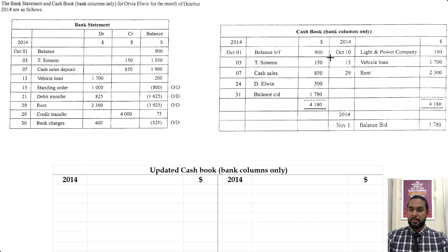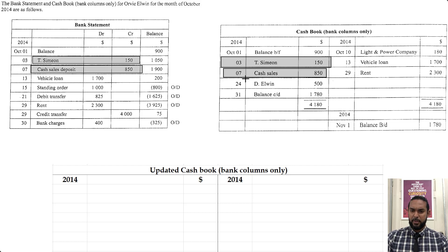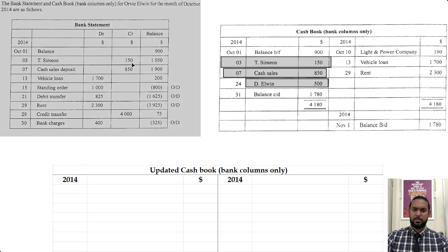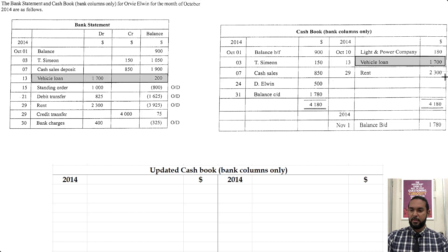Now let's look at the cash book. It also started at 900, so the opening balances match. T-Simeon appears in both — those match. The 850 in sales matches across as well. But I'm seeing a DL Win for 500 in the cash book that's not in the bank statement. And there's also a credit transfer in the bank statement that's not in the cash book. On the outflow side, there's a Light and Power Company payment in the cash book not seen in the bank statement, while vehicle loan 1700 and rent 2300 match on both sides.